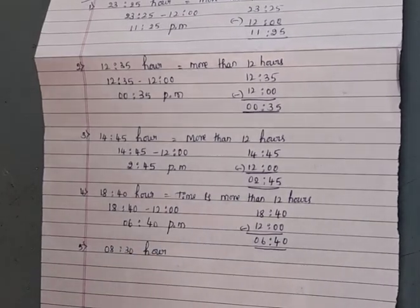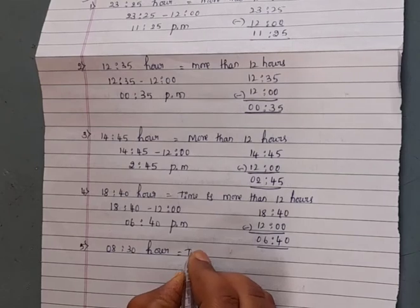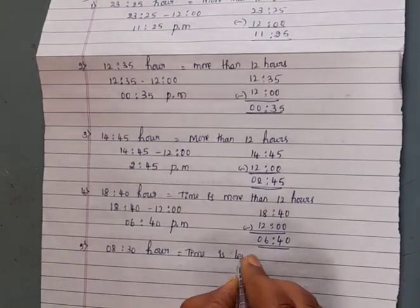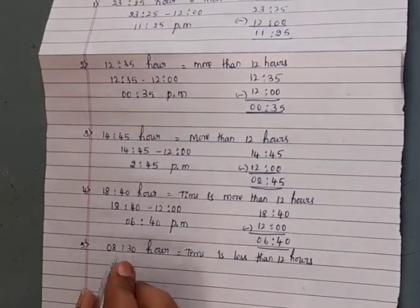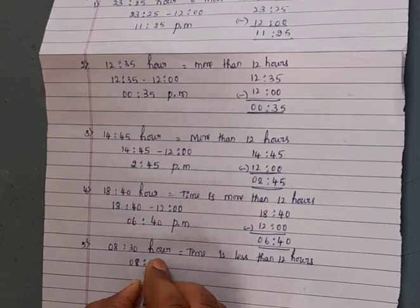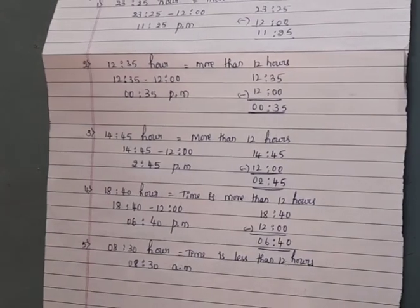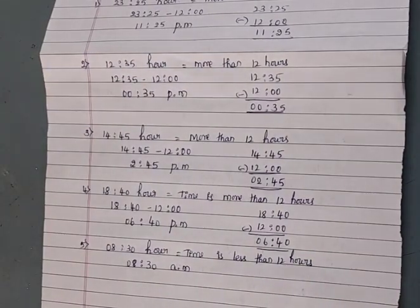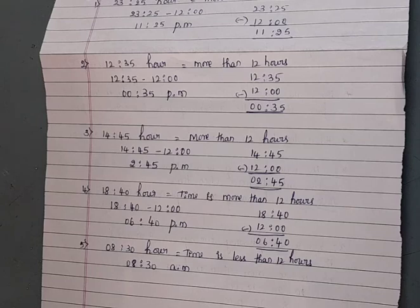You know that when the time is below 12 hours, it is written as AM. In this class, we learnt about how to convert 24 hour clock time into 12 hour clock time, and also how to denote timings in AM and PM.